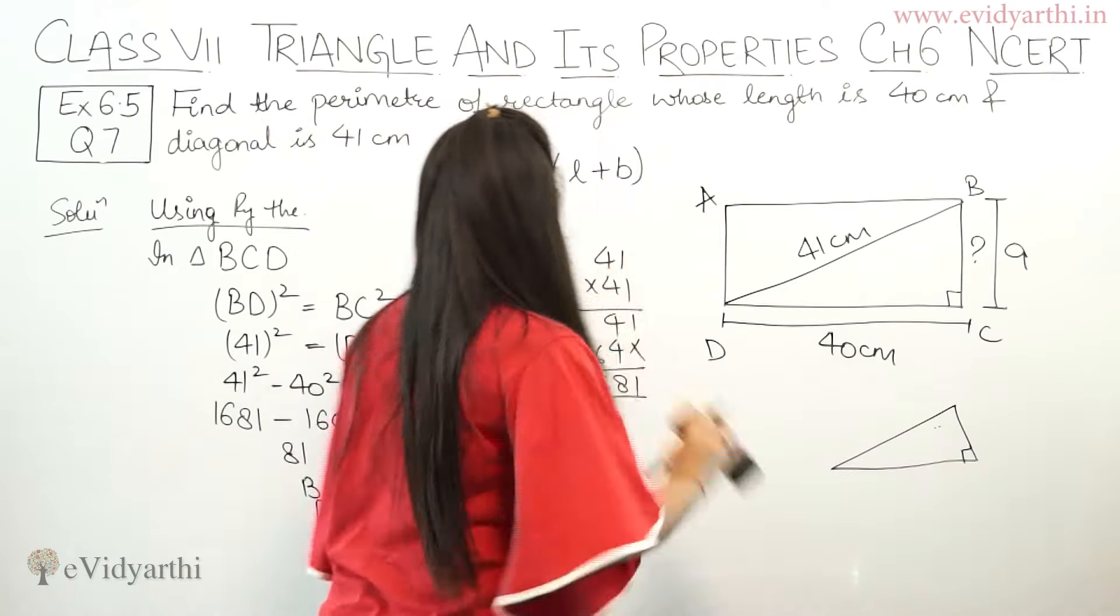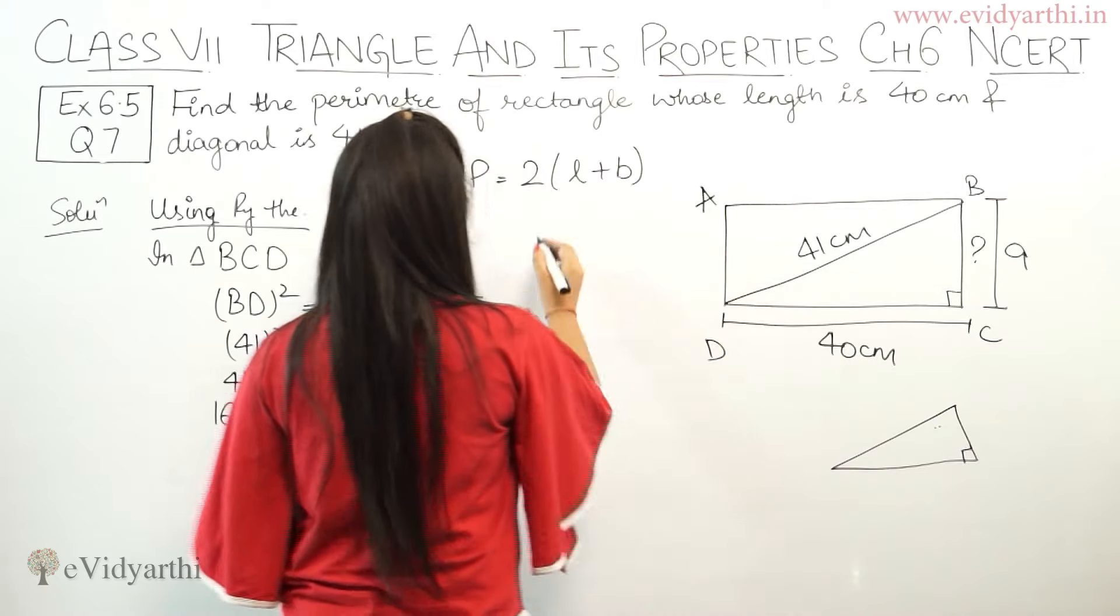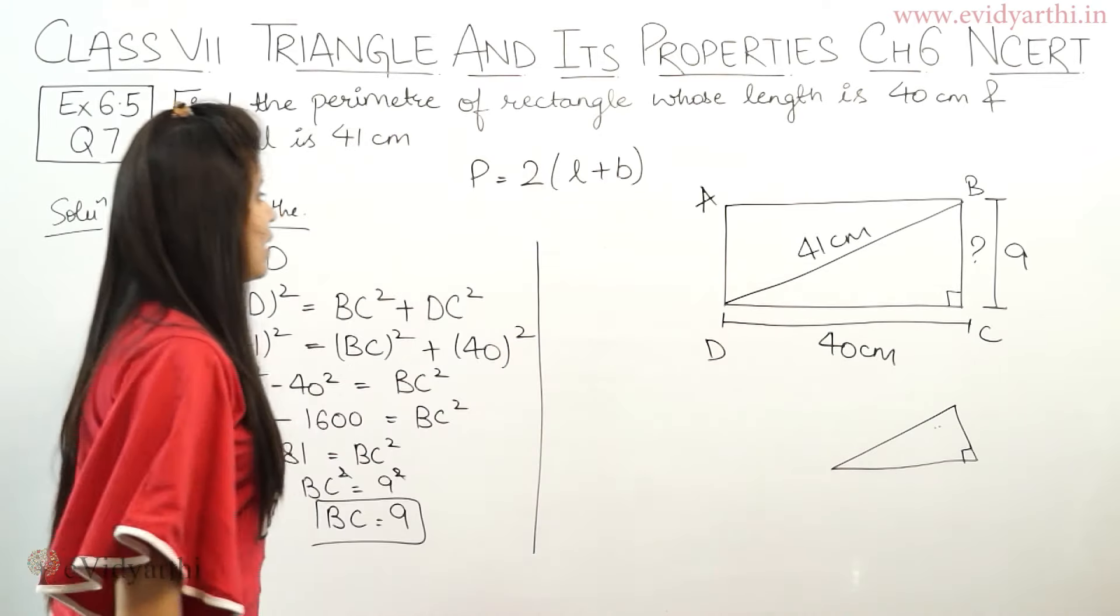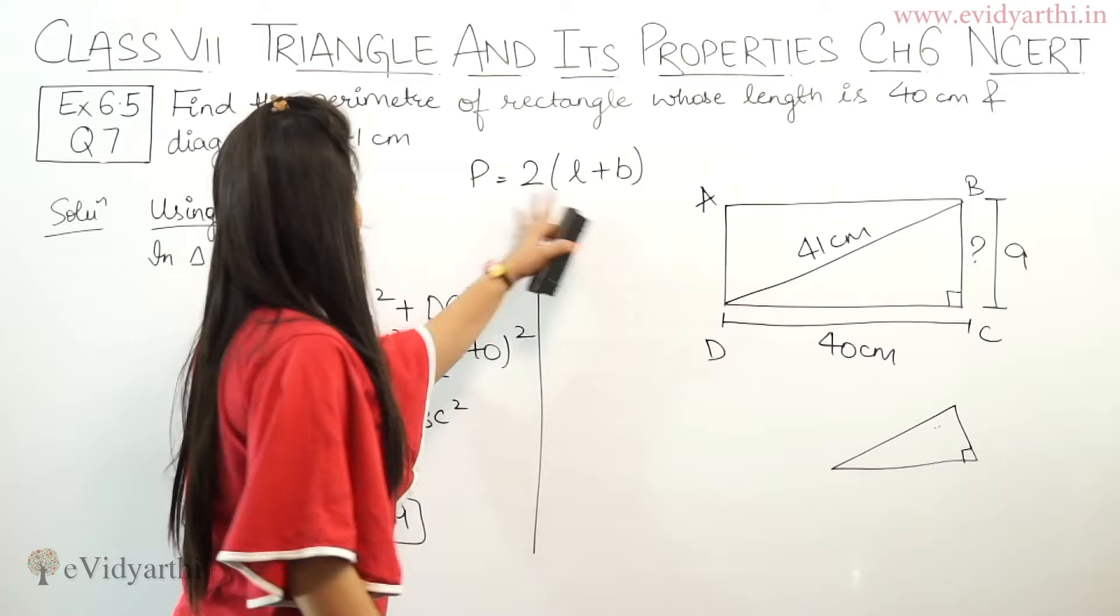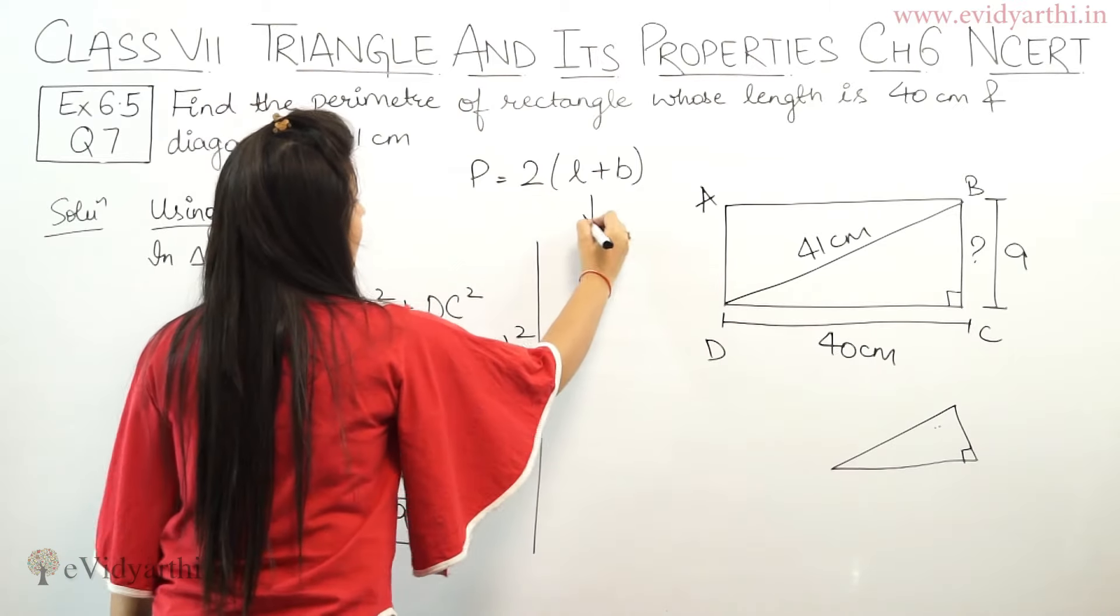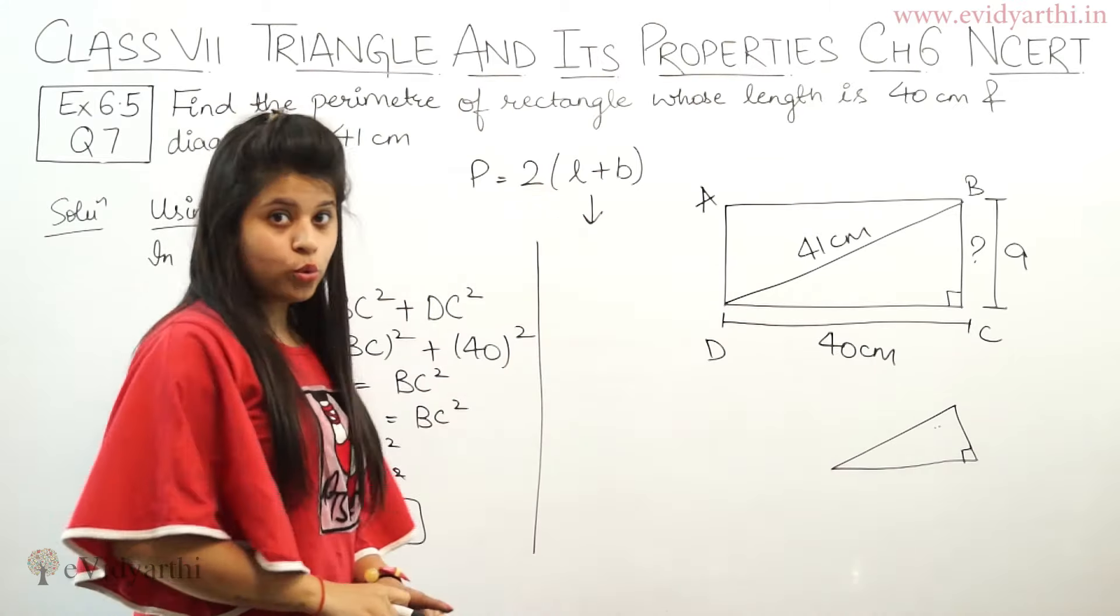So now you have length and breadth. So let's find the perimeter. So now what do you have to find? Perimeter. So first we'll write the perimeter formula, which is perimeter equals 2(L + B).